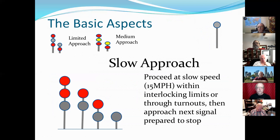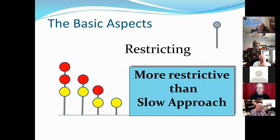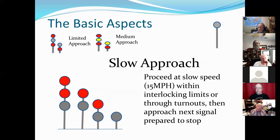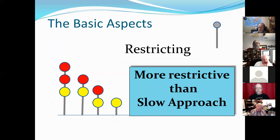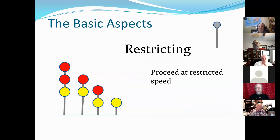Slow approach: here we have a flashing signal again, which is a restricting speed. Proceed at 15 miles per hour through the interlock, approach the next signal, prepare to stop. Restricting: this is the bottom yellow without the flashing — more restrictive than the slow approach. My mistake on the last one — that was a limiting signal. This restricting signal means proceed at the restricted speed, which may also be 15 miles per hour but may be different according to the rules in your book.